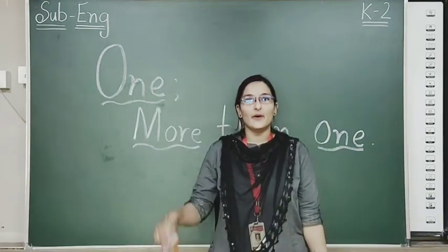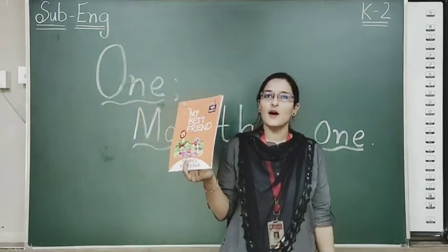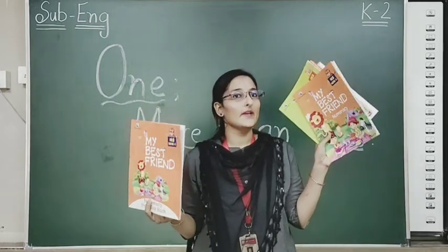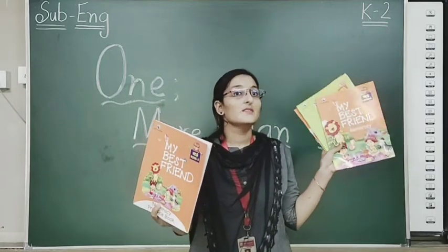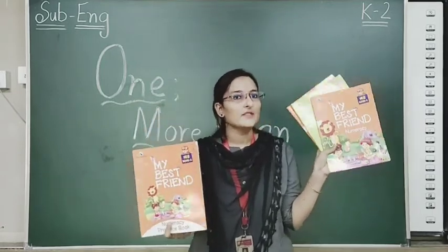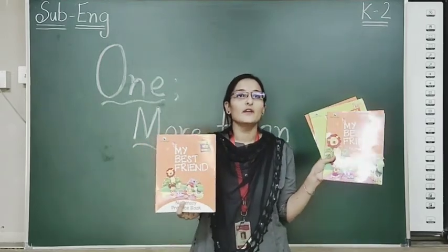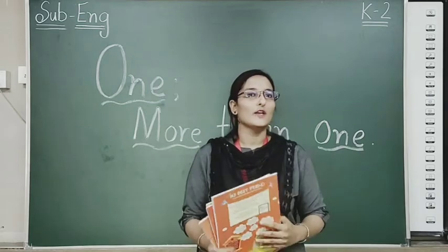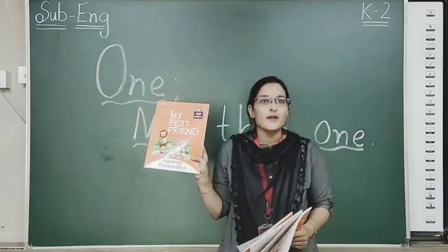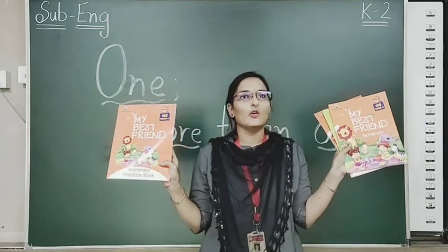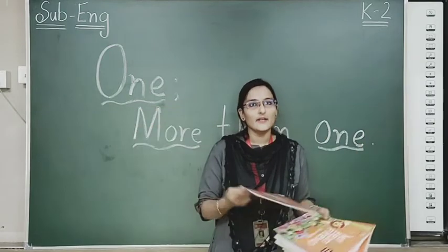Moving to our next example. What is this? A book. In this hand, how many books are there? One, two, three, four. This means many books are there. So when we are talking about more than one, we have to add S in the spelling. The spelling of book is B-O-O-K. Now in plural it will be B-O-O-K-S. Got it?